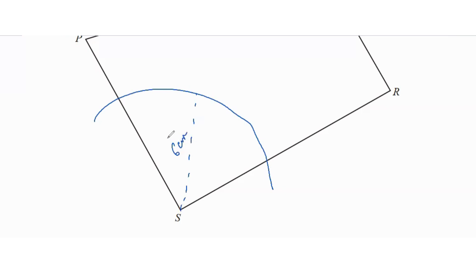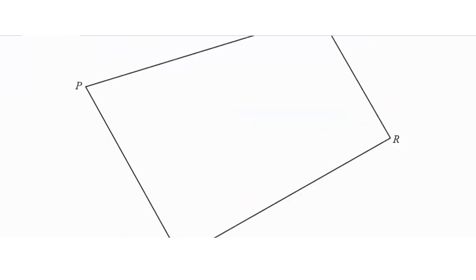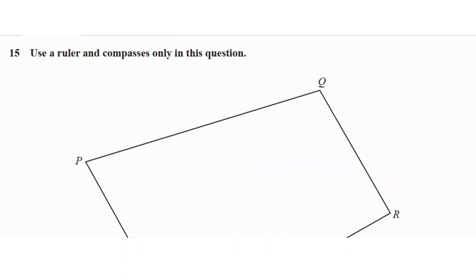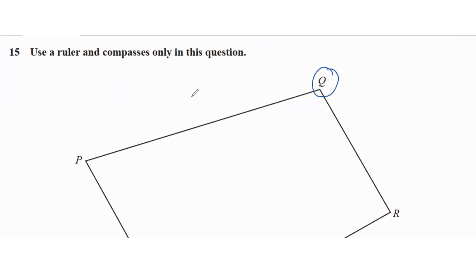The next part says it's equidistant from QP and QR. Since we have a common point between QP and QR, which is Q, we will draw an angle bisector. To draw an angle bisector at Q, you first open the compass a few centimeters — let's say 4 centimeters.